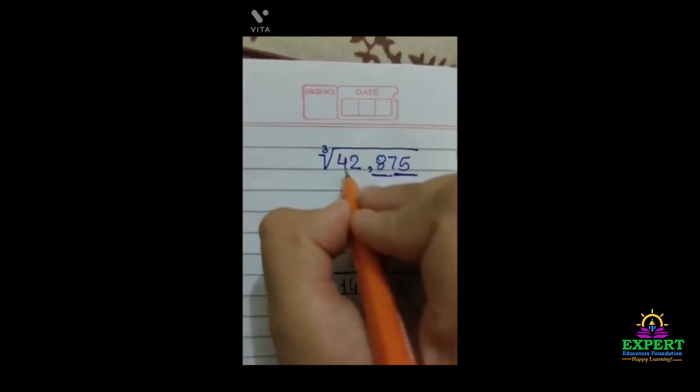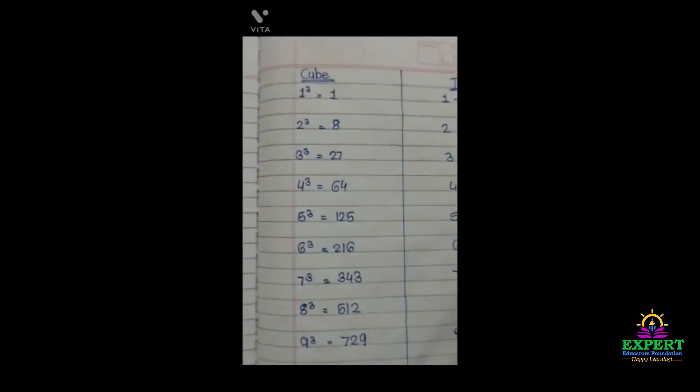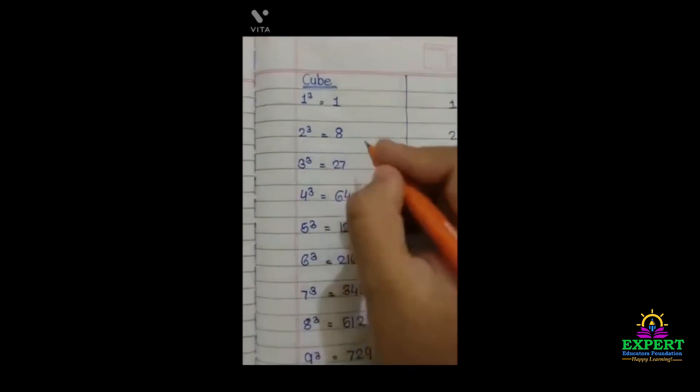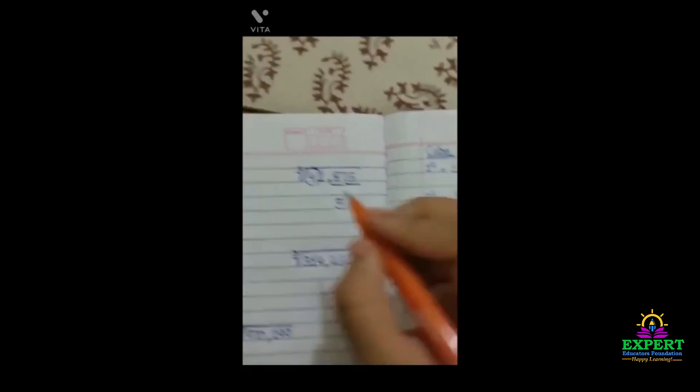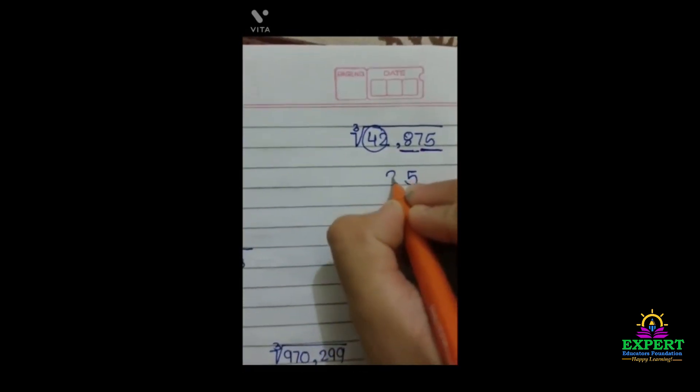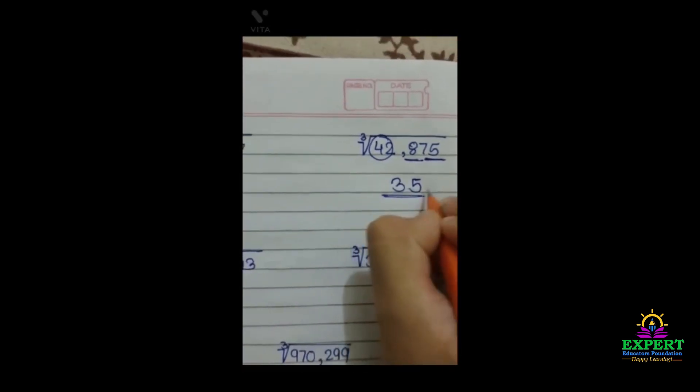We will forget about these two numbers and we will take 42. In cube, 42 is not there, but the smallest number is 27, and the cube root of 27 is 3. So we will take 3. See, our answer has come.